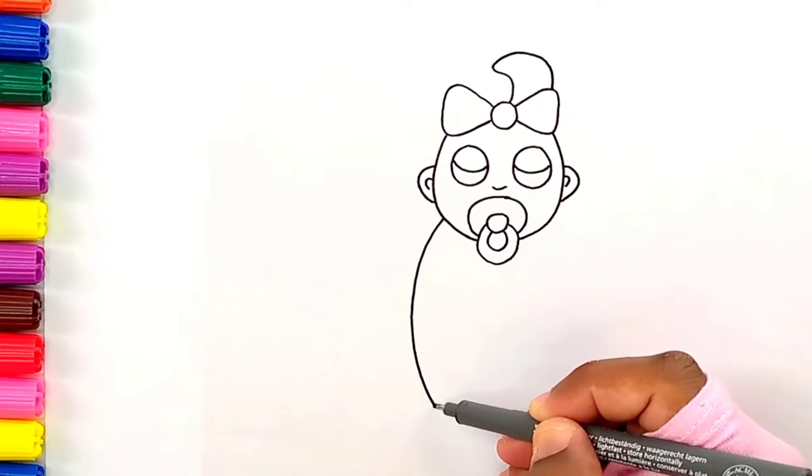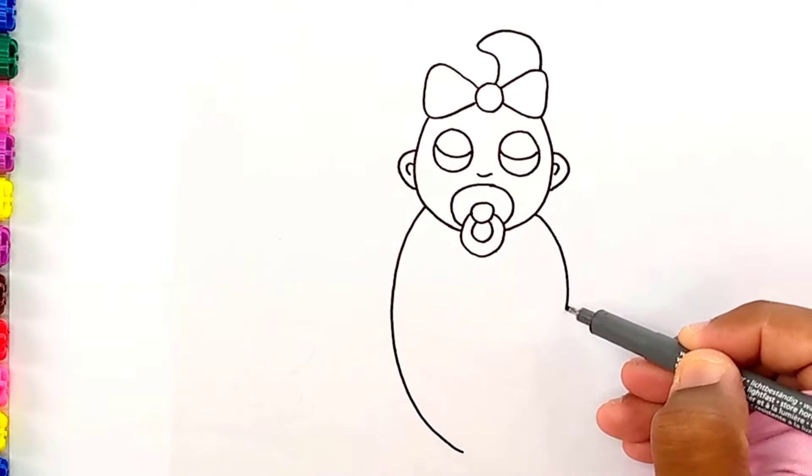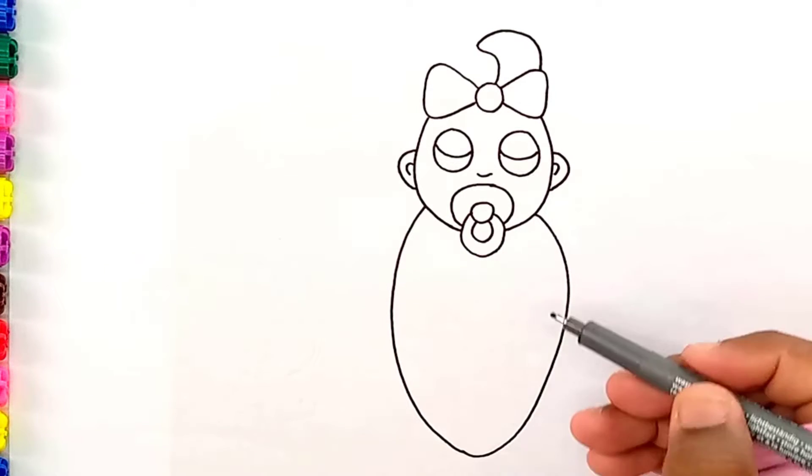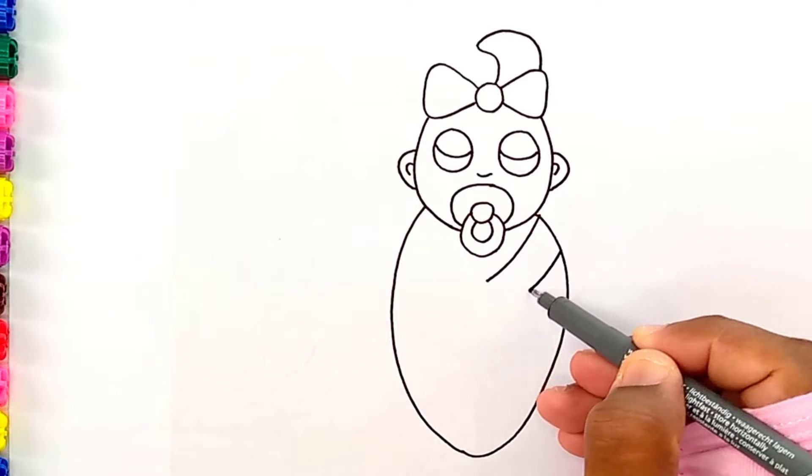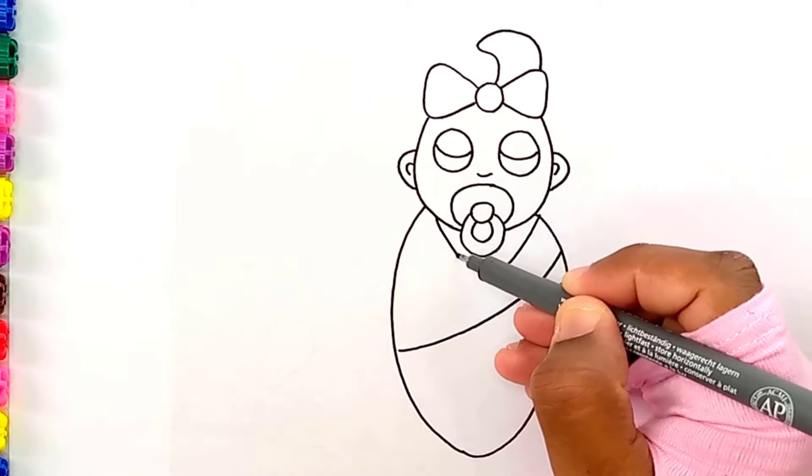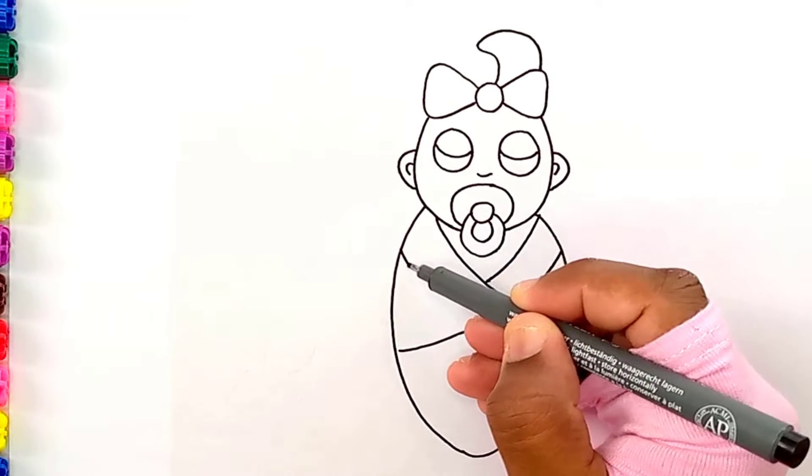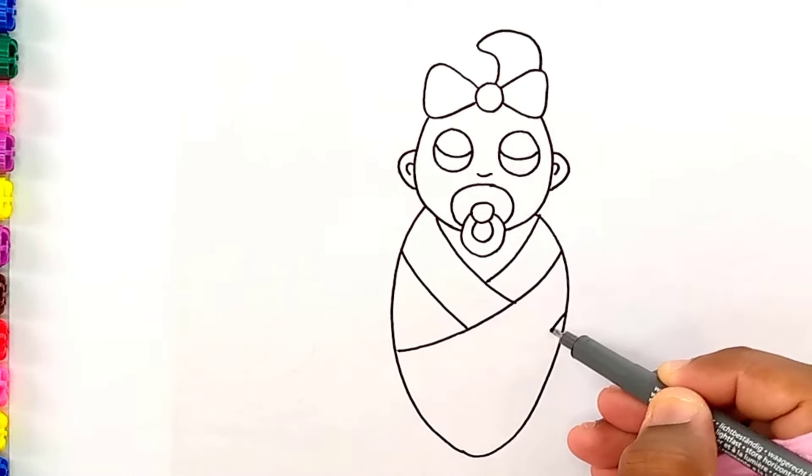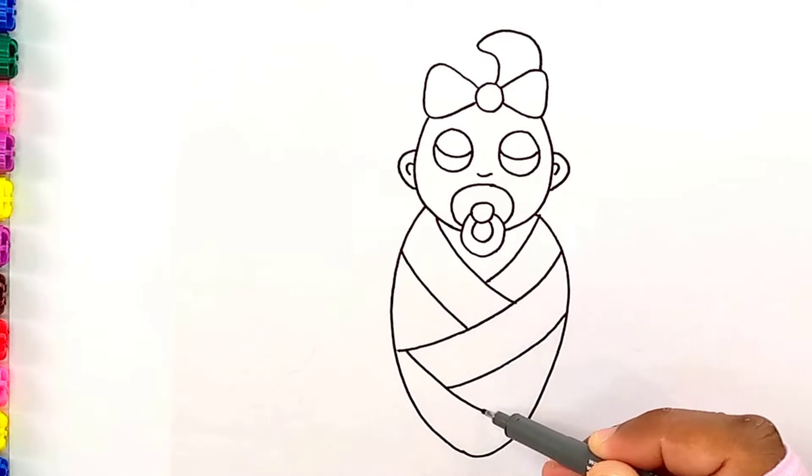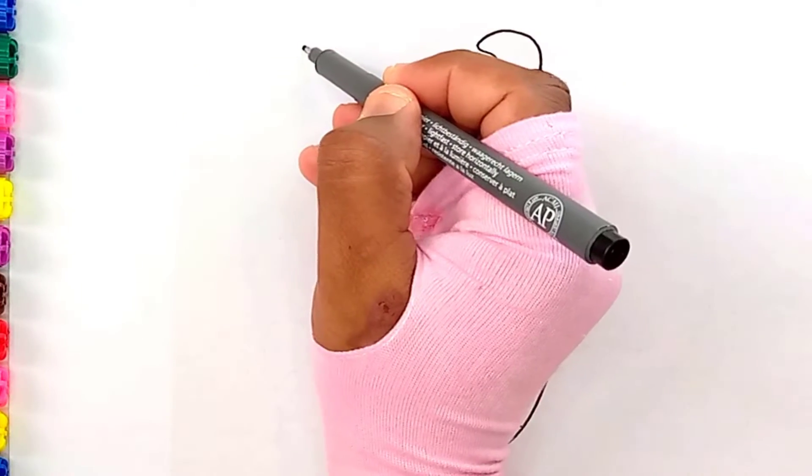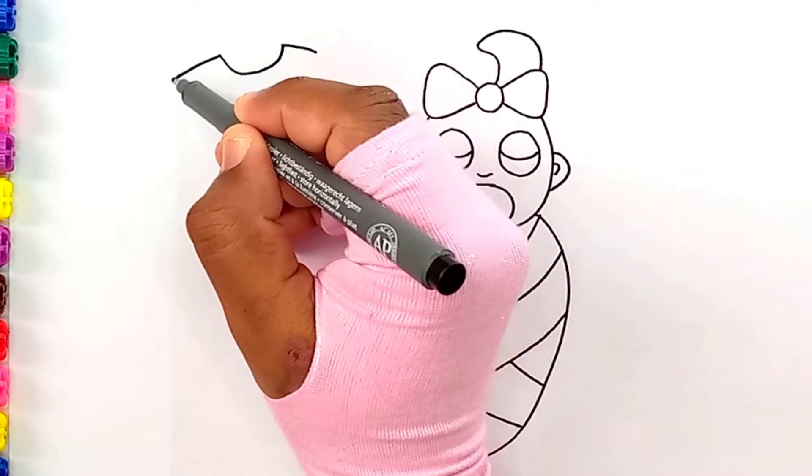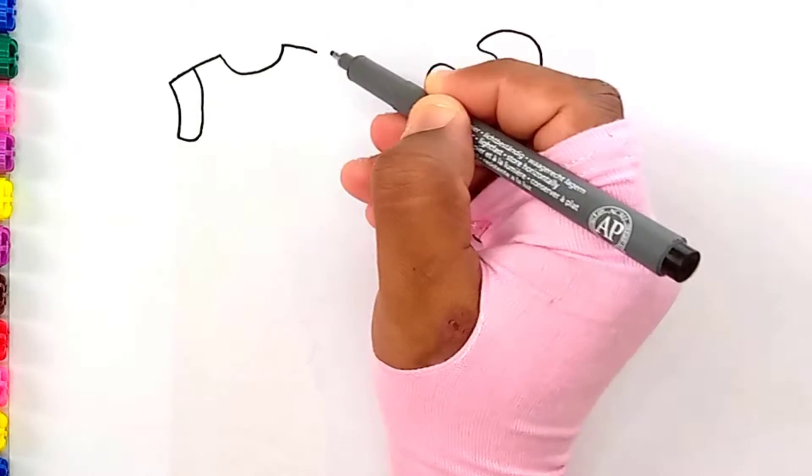Next I'm drawing his body. Now I'm drawing the baby accessories. Here I'm drawing his cute dress.